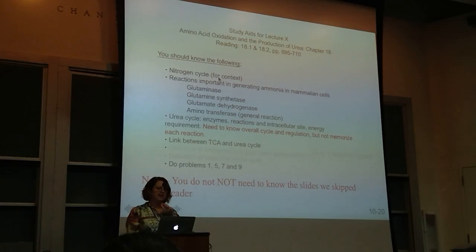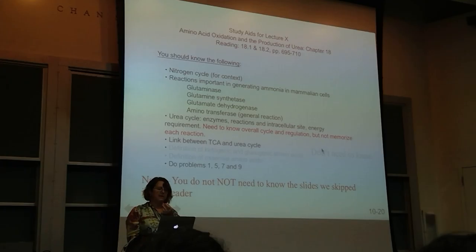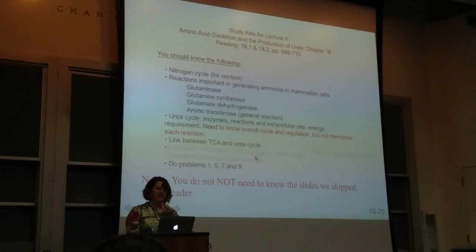The nitrogen cycle is just for context. The one part you'd want to know besides general context is the symbiotic nitrogen fixation I had slides on—but you don't have to memorize the whole cycle. For the urea cycle, you don't have to memorize every reaction—just know the overall cycle. We skipped essential amino acids and some amino acid metabolism, so you don't need to know that.